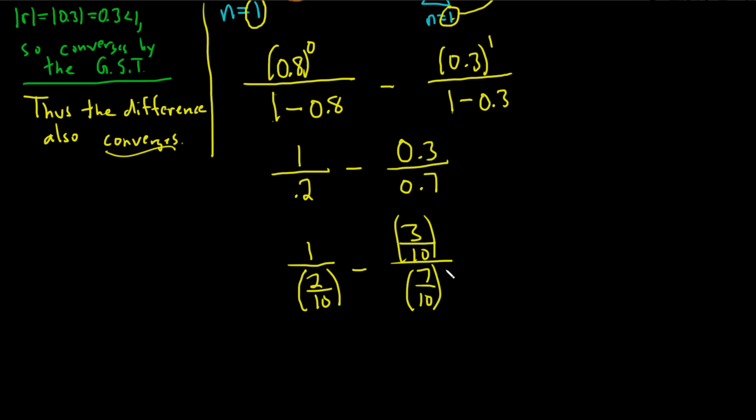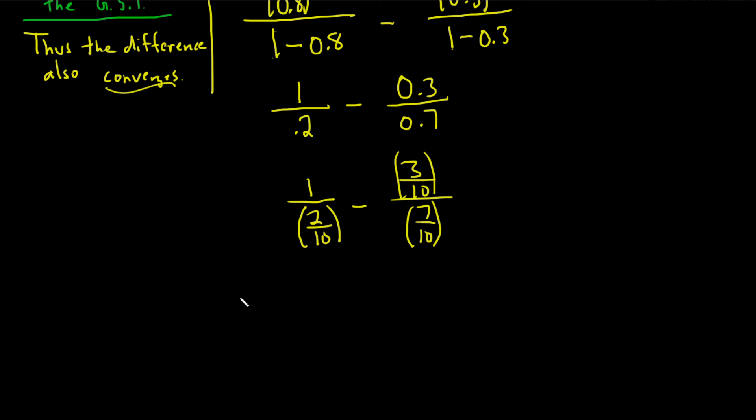And again, you can just use the calculator, but I just feel like doing it the hard way. 1 divided by 2 tenths is really 1 times the reciprocal. The reciprocal of 2 tenths is 10 halves minus 3 tenths divided by 7 tenths is really 3 tenths times the reciprocal of 7 tenths, so 10 sevenths.